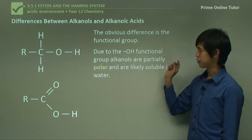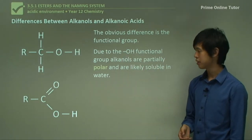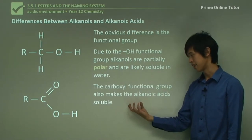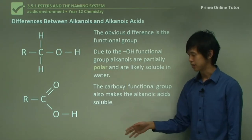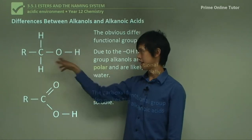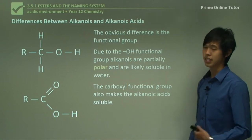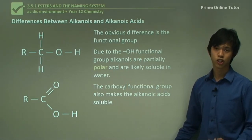Due to the OH functional group, alkanols are partially polar and are likely soluble in water. Whereas the carboxylic functional group also makes the alkanoic acids soluble. So they're both soluble in water because they're both polar. You can see this is polar, and this may be slightly polar, and this is definitely polar. So there's polar parts, which means that it's probably soluble in water, obviously if there's long chains, maybe not.